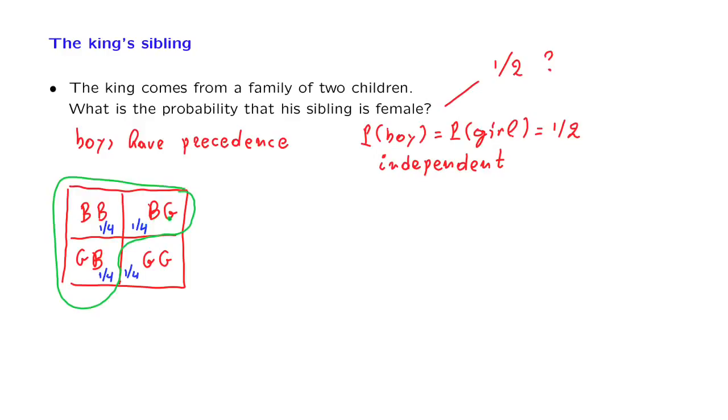In two of these outcomes, the sibling is a girl. And therefore, the conditional probability, given that there is a boy, the conditional probability is going to be 2 thirds.